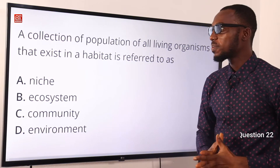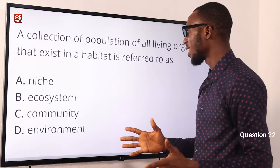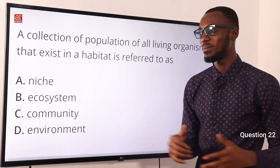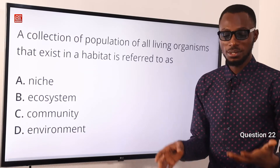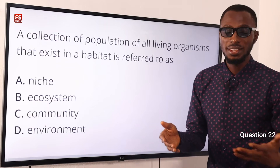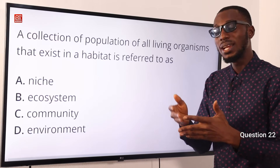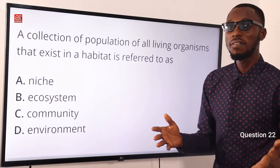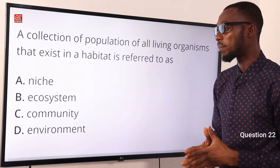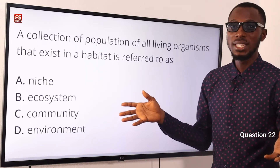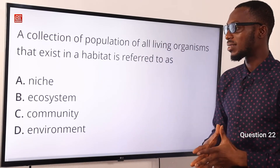Number 22. A collection of populations of all living organisms that exist in a habitat is referred to as what? This is referred to as community. Imagine a fresh water pond — you have microorganisms, bacteria, insects, snails, tadpoles, fishes, and also some thread-like plants. A community consists of populations of living organisms in a particular habitat.